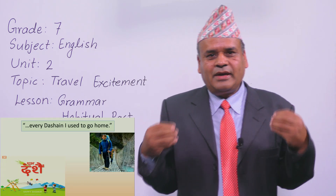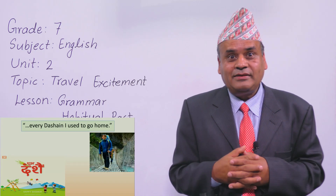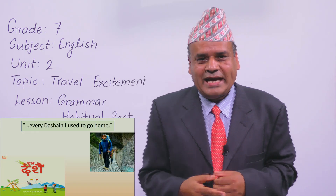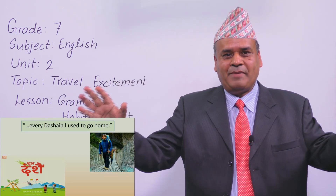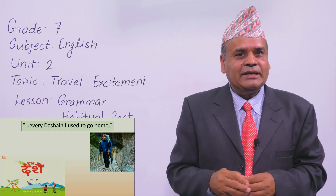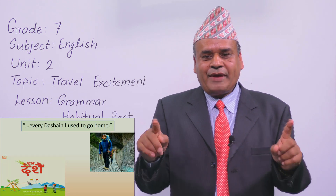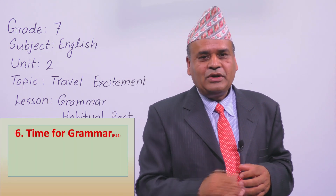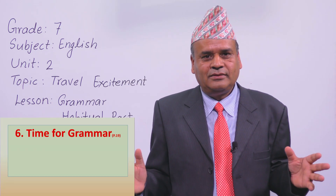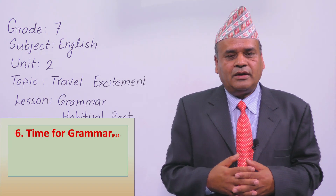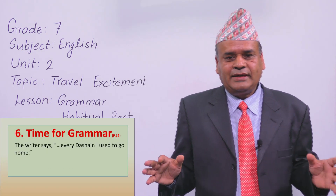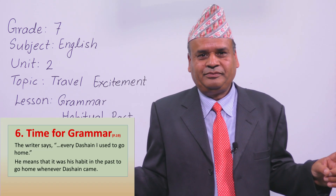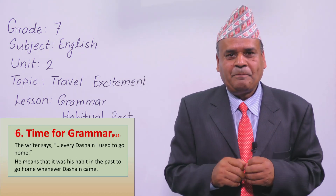The writer used to be very excited to go home for Dasain. There were two reasons: first, the writer would meet the family members and be together with them; second, there was the opportunity to celebrate the festival. So the writer uses: every Dasain I used to go home. Now let's look at the grammar on page number 19. We describe the meaning — it was his habit in the past to go home whenever Dasain came.